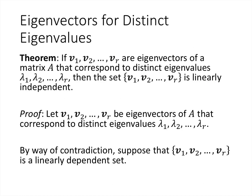Another theorem here — this is going to be an important one for us a little later on. It says that if we collect one eigenvector per distinct eigenvalue into a set, that set is linearly independent. We have r distinct eigenvalues lambda 1 through lambda r, and one eigenvector per eigenvalue. For any given eigenvalue there are lots of corresponding eigenvectors — a whole space worth of them. But this theorem says: just pick one eigenvector for each eigenvalue, throw them in a set, and that set will be linearly independent.